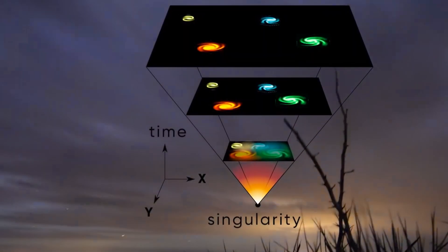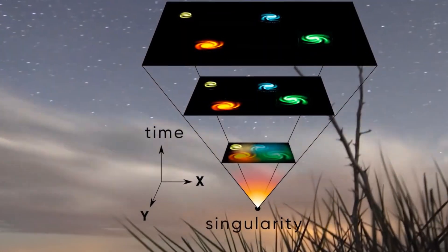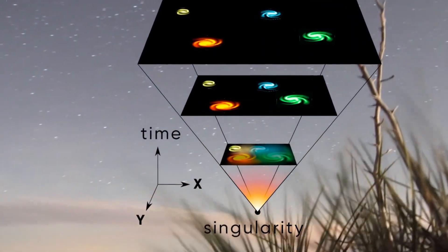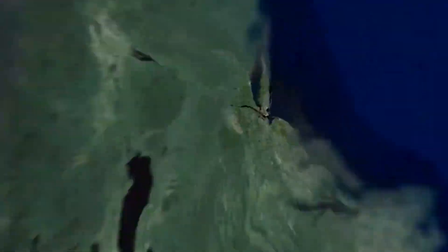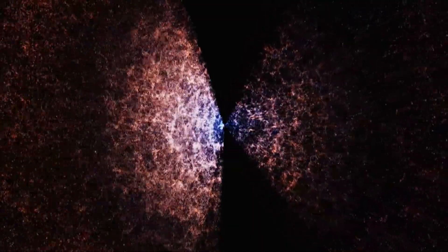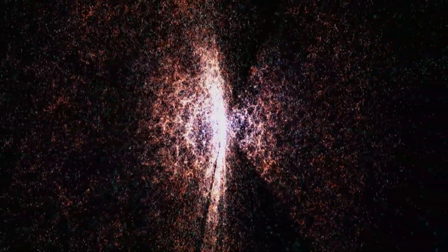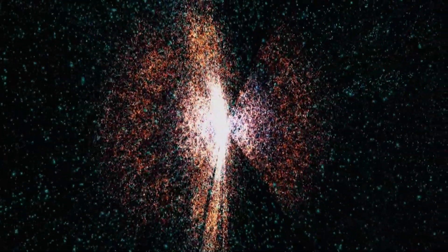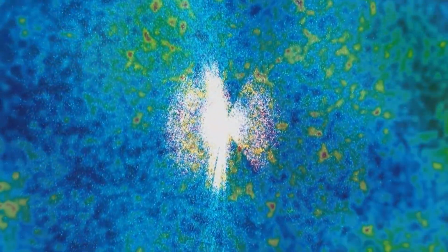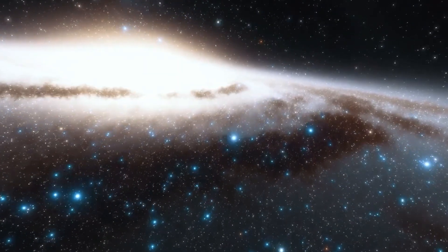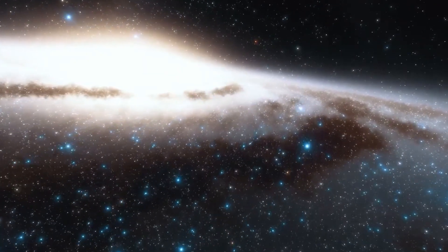The example of the Crab Nebula, which occupies an area in the constellation of Taurus, illustrates how revealing the images provided by Hubble are. More precisely, they are the relics of a supernova observed as early as July 1054. As a result of the associated brightness burst, the object became the second brightest astronomical object in the daytime sky.